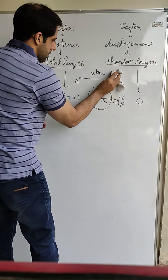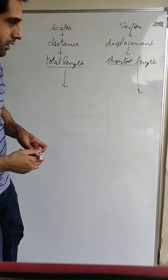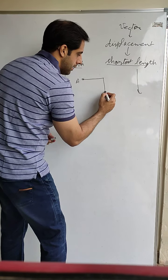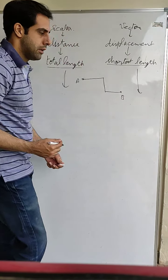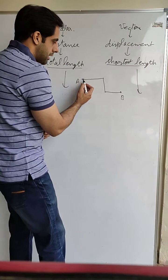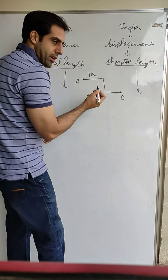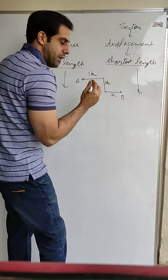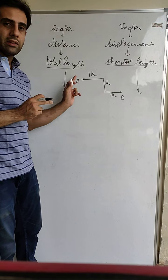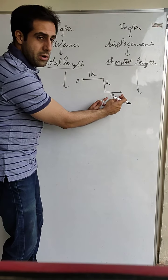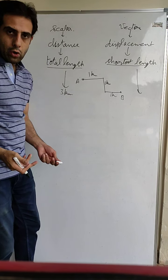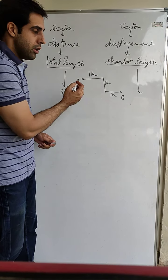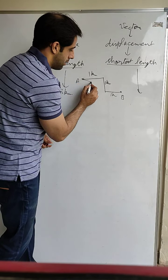Let's take another example. Let A be the initial point and the body moves along an L-shaped path — going in one direction, then turning and going further, then turning again. Let the distance between each segment be 1 kilometer, 1 kilometer, and 1 kilometer. The total distance covered will be 1 + 1 + 1 = 3 kilometers. What is the displacement? Displacement is the shortest length between the initial point and the final point — you connect them with a straight line.